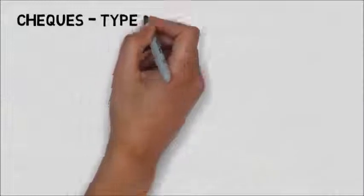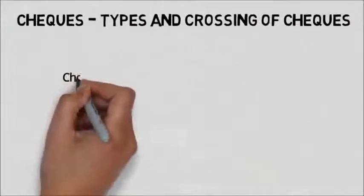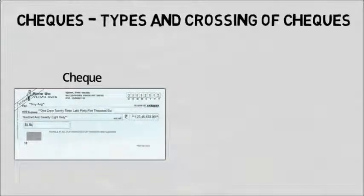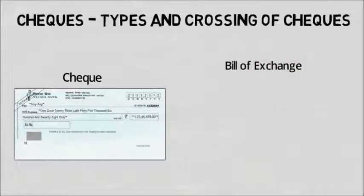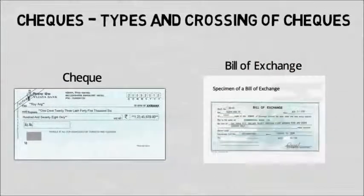A check is a kind of bill of exchange, or an unconditional order in writing addressed by the customer with a signature to the bank, to pay a certain amount to the bearer or as per order. A bill of exchange is a written and signed order directing the person named in it to pay a certain amount of money only to, or to the order of, a certain person or to the bearer.